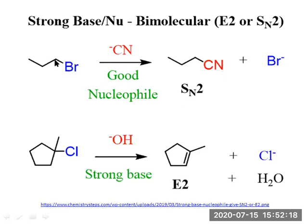Since the first example is a primary alkyl halide, SN2 is possible. If the substrate is a tertiary alkyl halide, SN2 is not possible because backside attack is very difficult — so it undergoes E2 elimination instead.